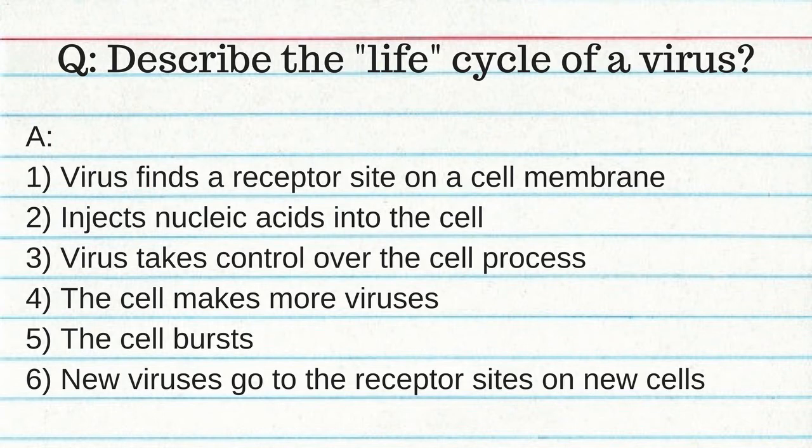A virus is composed of a protein coat surrounding a nucleic acid core — surrounding DNA and RNA. Viruses are considered non-living because they do not carry out all life processes and are not made of cells. The life cycle of a virus: it finds a receptor site on a cell membrane, injects nucleic acid into the cell, takes control of cell processes, the cell makes more viruses, the cell bursts, and new viruses infect new cells. Examples of viruses: colds, influenza, HIV, hepatitis, herpes, and smallpox. Vaccines are weak or non-functioning pieces of a virus that prepare your immune system to fight off the actual virus. Antibiotics do not work against viruses.